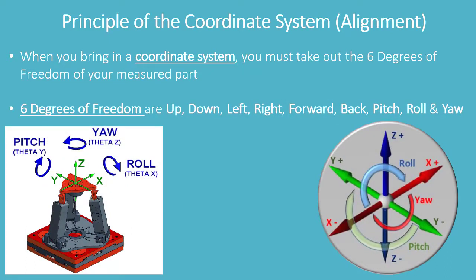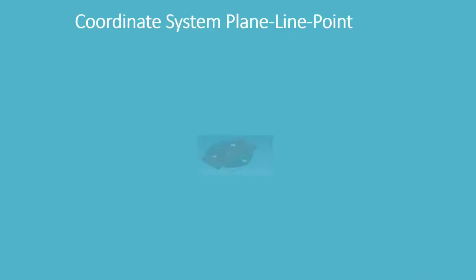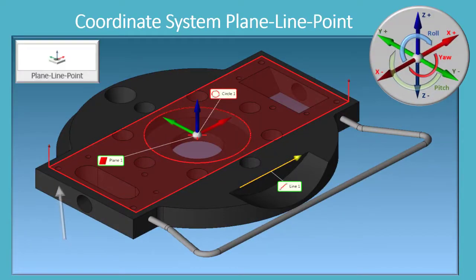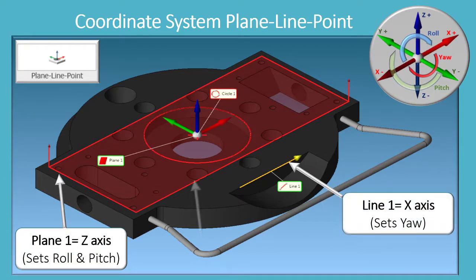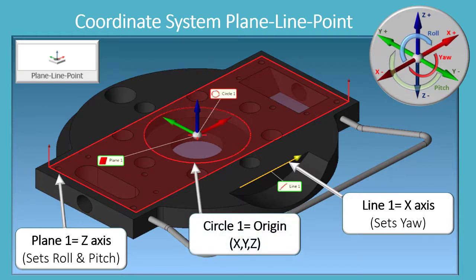When you bring in a coordinate system, you must take out the six degrees of freedom of your measured part. Six degrees of freedom are: up, down, left, right, forward, back, pitch, roll, and yaw. Plane one sets the Z-axis, roll, and pitch. Line one sets the X-axis and yaw. Circle one sets the origin X, Y, Z. Circle one is a constructed circle from plane one and circle two.